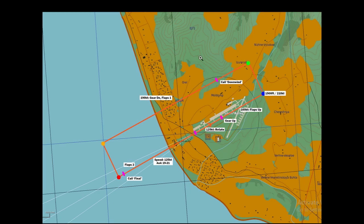We're going to do two circuits. The first time, touch down, call touch and go, throttle up, flaps up one notch, and do another takeoff and circuit. The second time, call 'Sochi traffic, Torrey Pine, final for runway 06, full stop.' Come in, stop, and taxi off the runway. The radio call when clear is 'Sochi traffic, Torrey Pine, clear runway 06.'